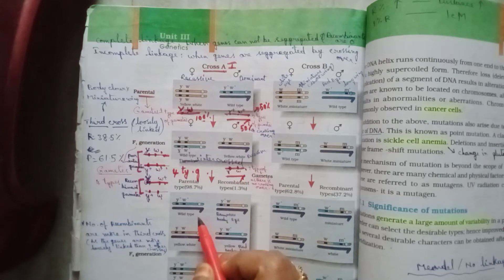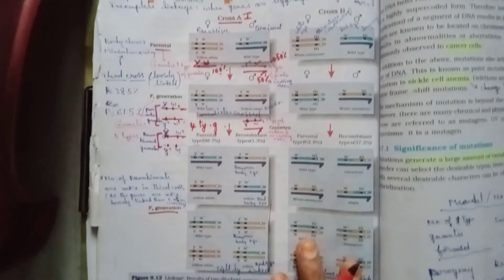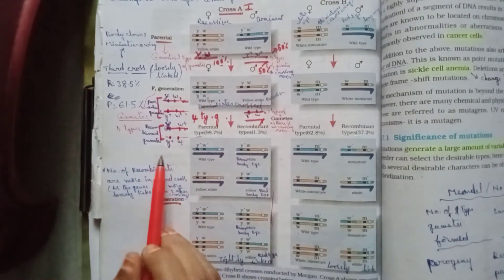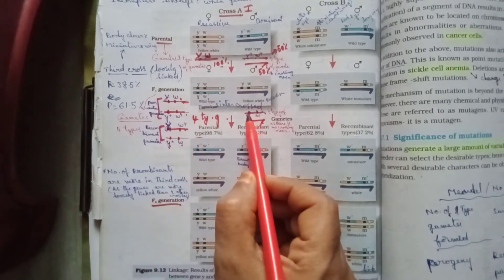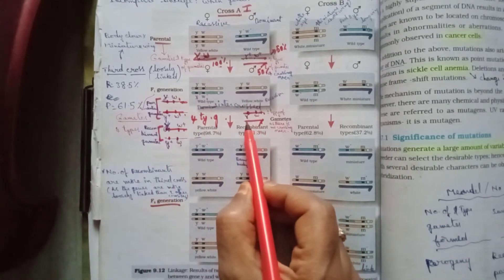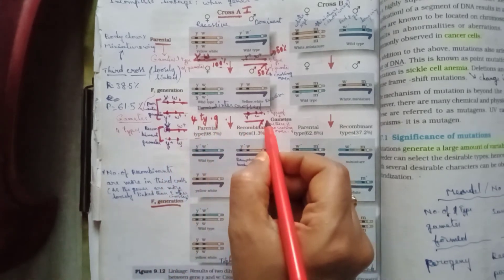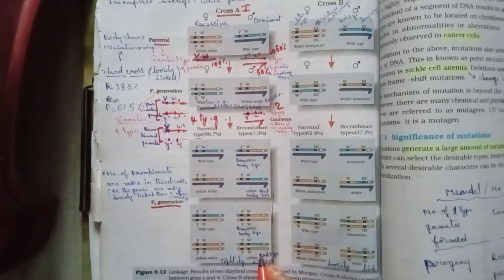When all four types of female gametes unite with the X-carrying male gamete and the Y-carrying male gamete, F2 generation offspring are formed. Since there are four types of female gametes and two types of male gametes, eight different types of genotypes will be formed in the F2 generation.